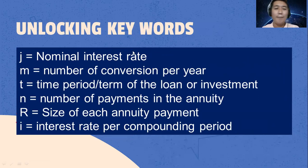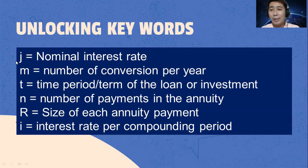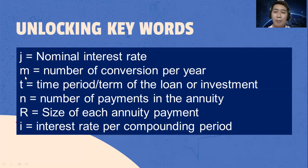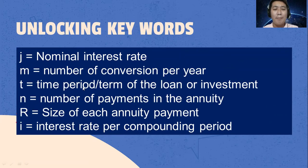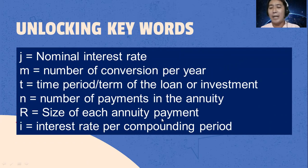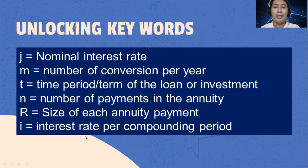These are the keywords or variables to be remembered. J is equal to nominal interest rate. M is the number of conversions per year or number of compoundings per year. T is the time period or term of the loan or investment. N is the number of payments in the annuity. R is the size of each annuity payment or the periodic payment. I is the interest rate per compounding period.